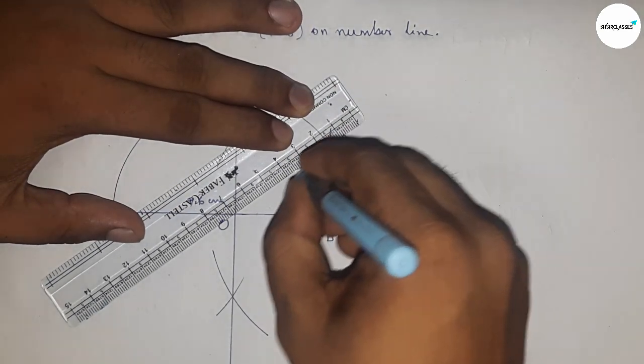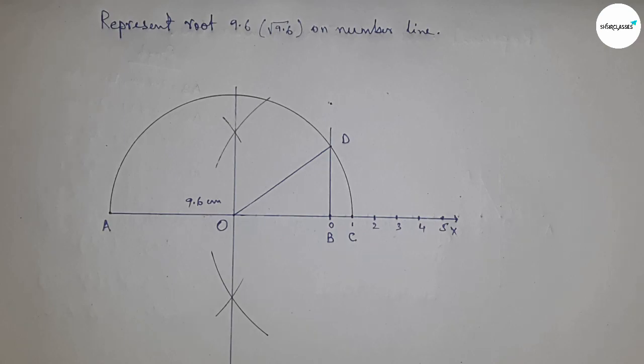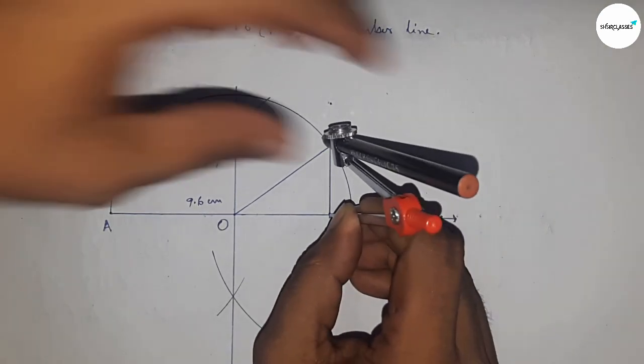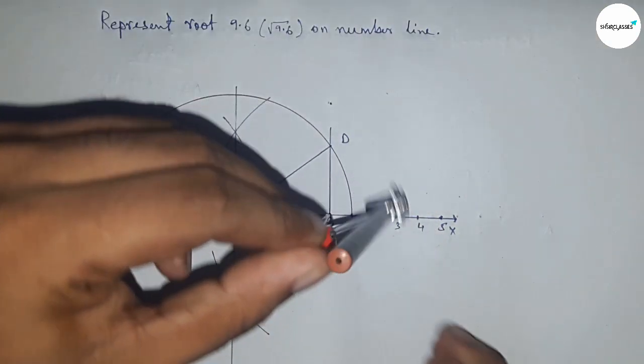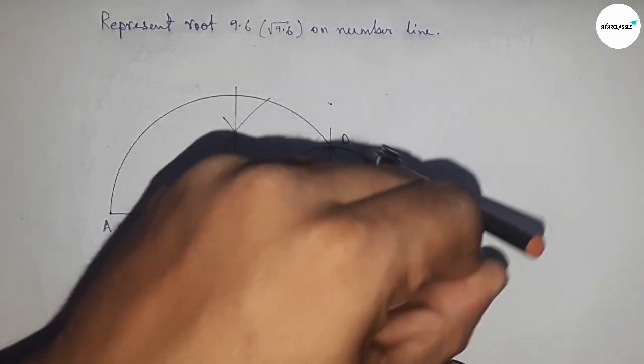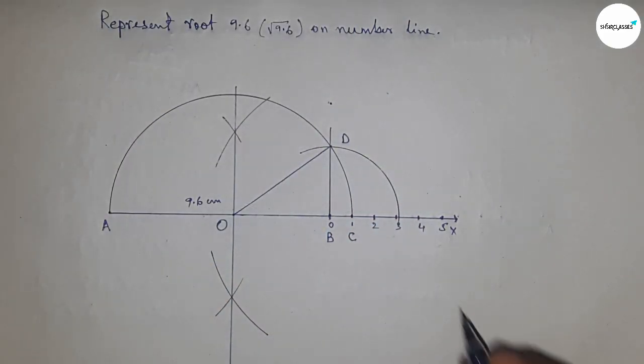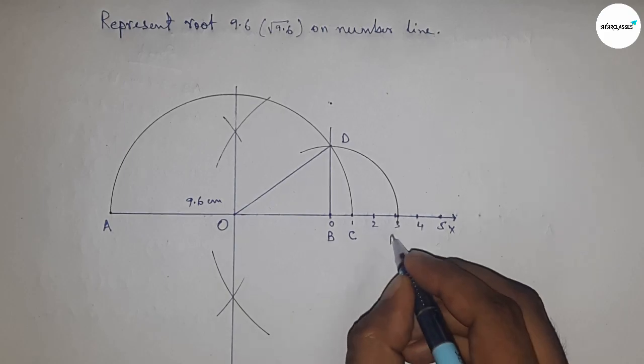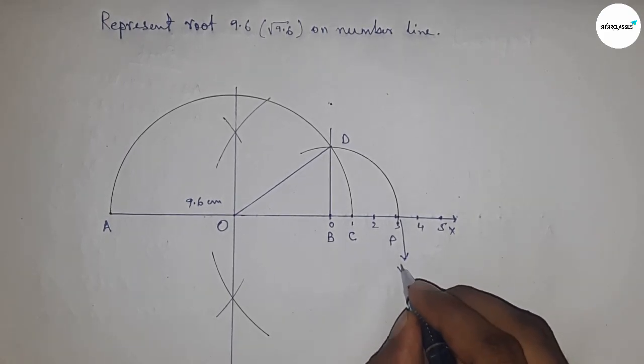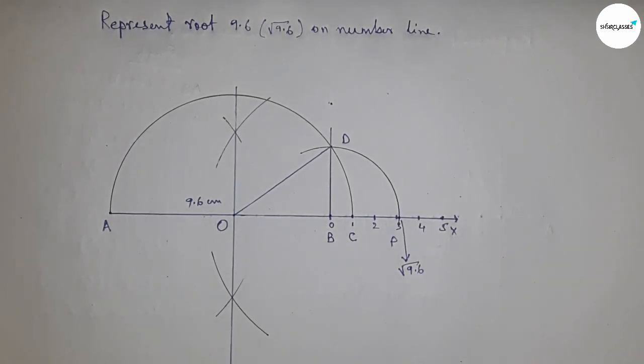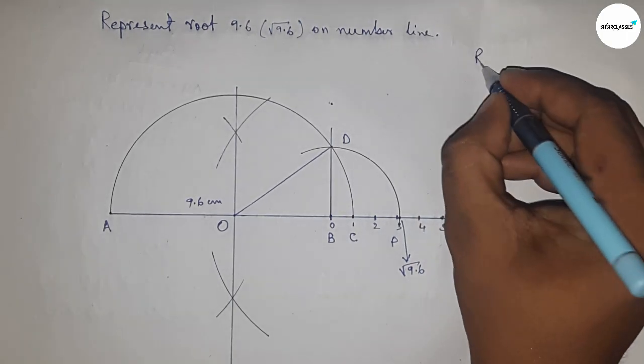Next, join O and D. Now take the length BD using a compass to draw an arc which meets the number line at point P. This is the representation of root 9.6 on the number line.